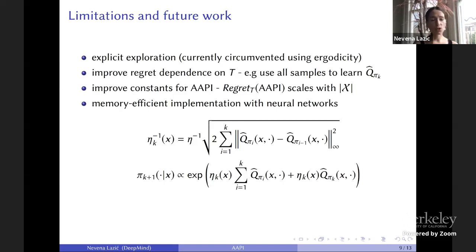Another limitation or direction for future work is improving constants. In terms of the constants multiplying the T term, Polytex does not depend on the number of states. In the linear case, it will just depend on the number of features. But when we analyze AAPI, we get a term which can potentially be as big as the size of the state space. I think this is not a fundamental problem, but more an algebra problem. It's something that needs to be improved in the analysis.